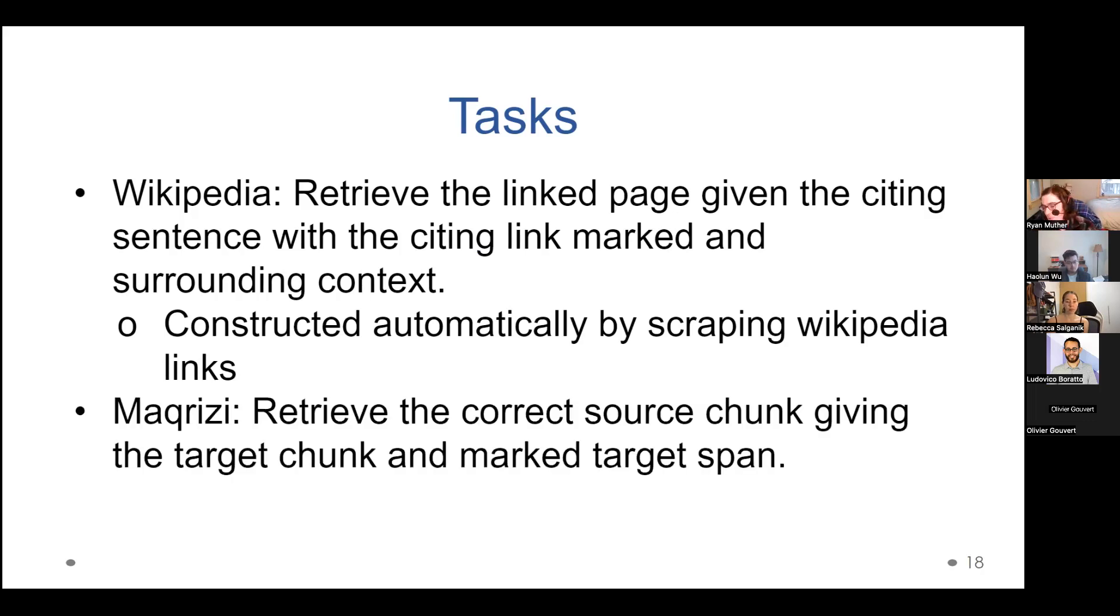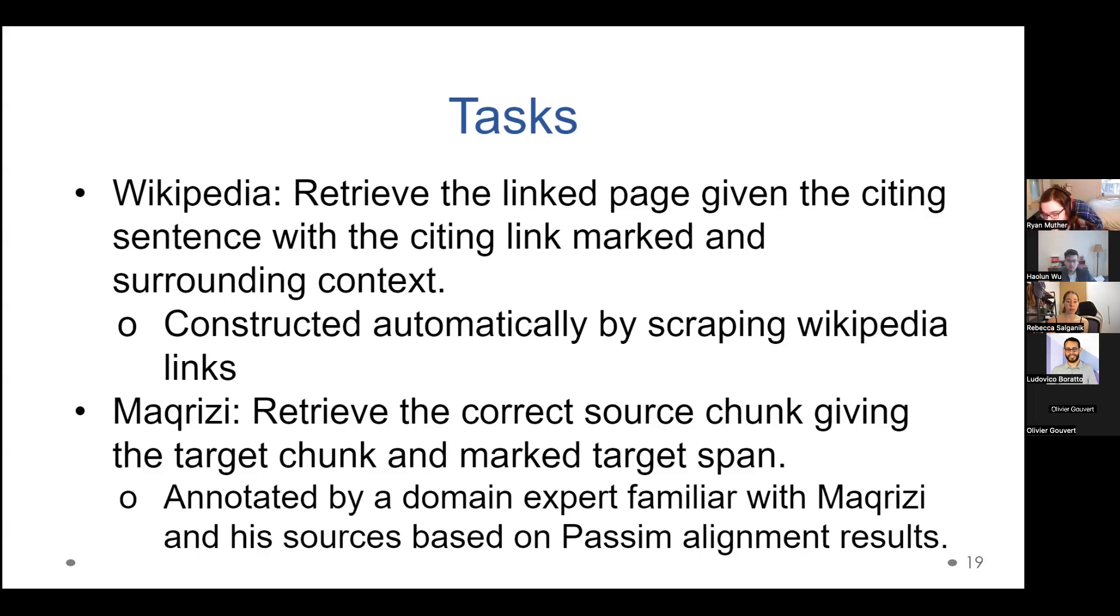So the task here for Wikipedia is that we have taken all of the possible source pages and cut them up into their component sections. And the goal is that given the citing sentence with the link that you're trying to find somehow marked and maybe some context, some additional sentences on either side from the same section, can we retrieve a section, not necessarily the first section, but any section at all, of the correct cited page? And then we've constructed this automatically by essentially scraping, taking a dump of Wikipedia and taking links out of that automatically. And then for Macrizy, since the texts we're working with are quite long, we cut all of the texts up into 300 token chunks. And the idea is that you're given a target, which is a piece of Macrizy, a 300 word chunk and a mask, a marked target span within it. So it's telling us, here's the portion of the text we want to try and attribute. And the goal is to retrieve one of the possibly several potential source chunks as annotated by a domain expert who is literally in the process of writing the book on this guy. And he bases his judgments on essentially an alignment, a text reuse detection algorithm that David Smith and I have worked on, called Passim, aligning these two texts that we're working with.